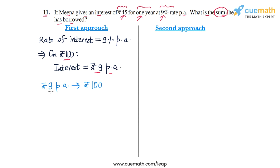What we have observed is that interest amount of rupees 9 in a year corresponds to a sum or a principal amount of rupees 100. And this means that if the interest amount is rupees 45 in a year, this will correspond to a principal amount of rupees...